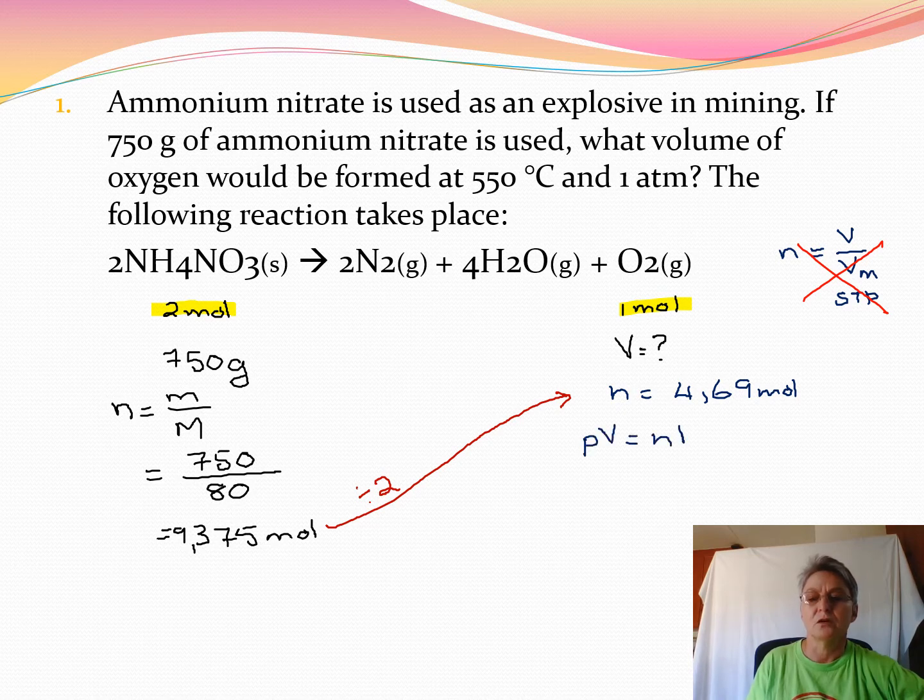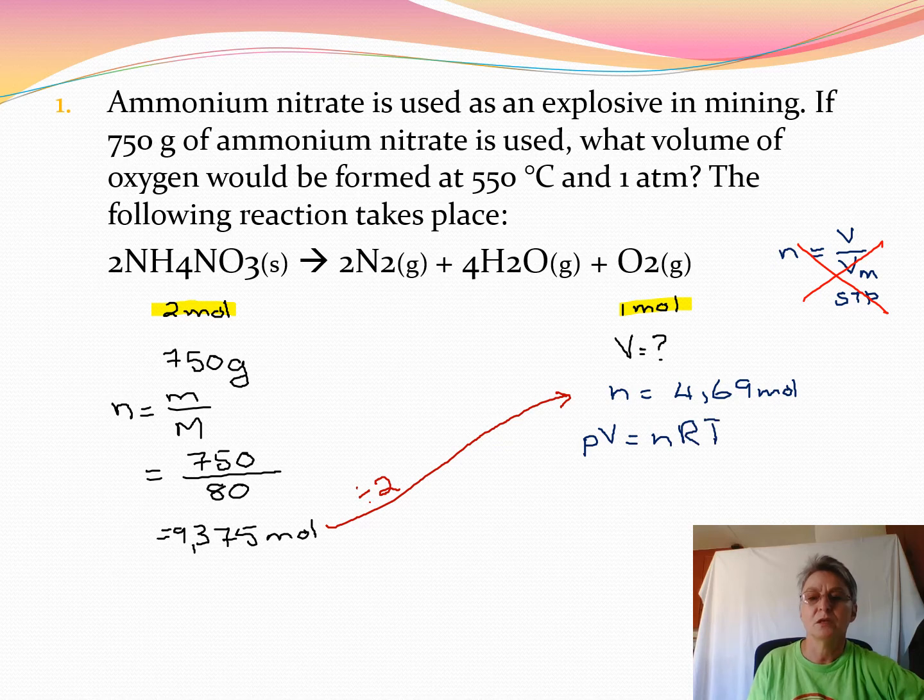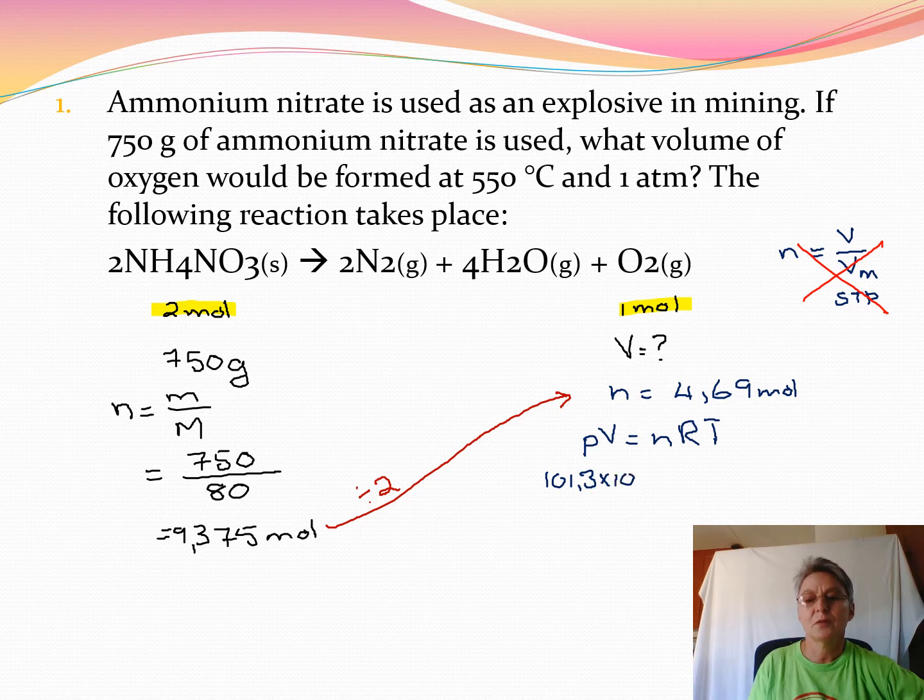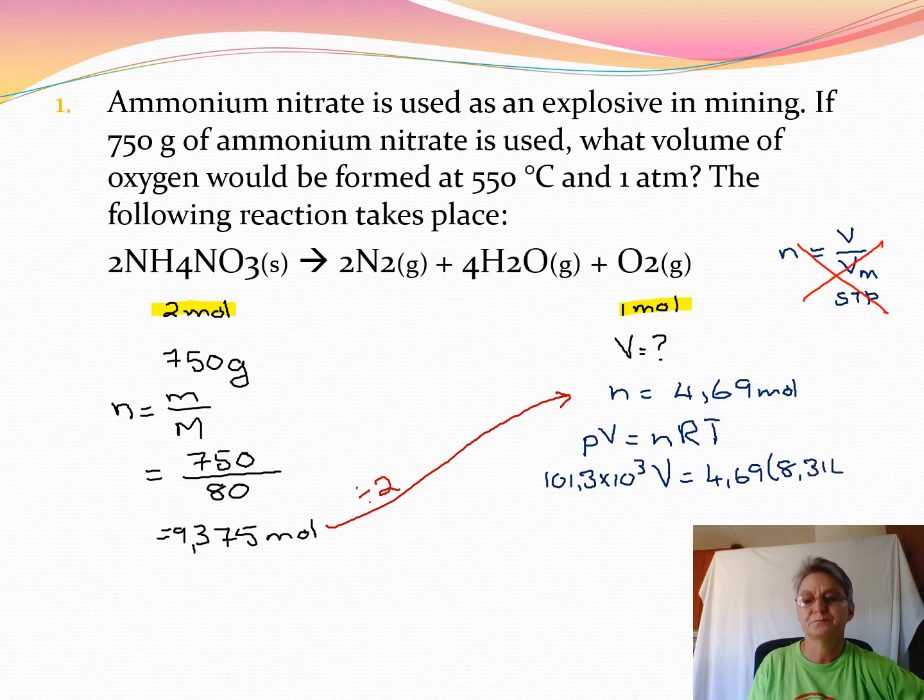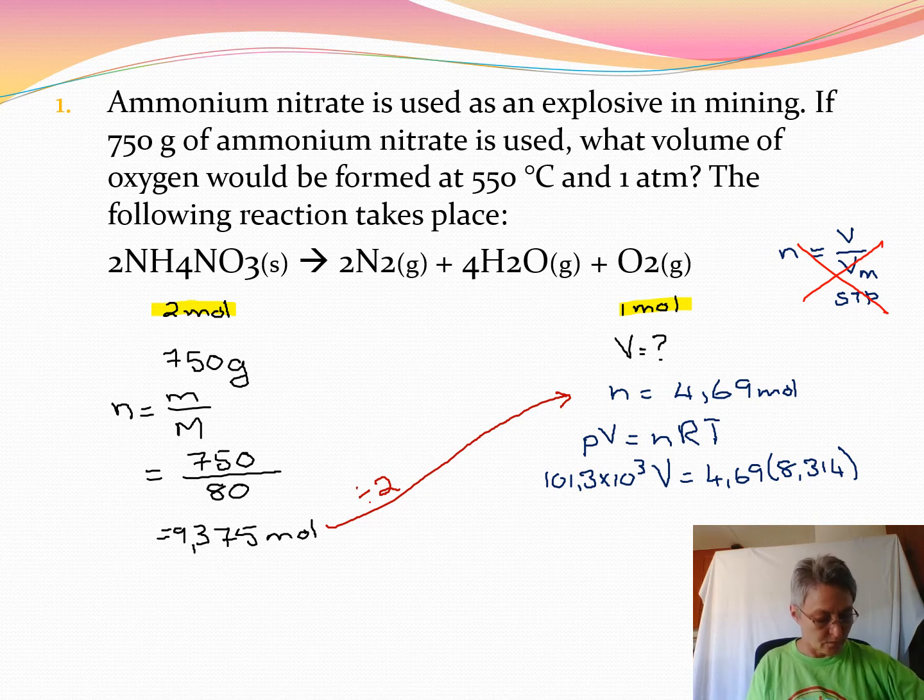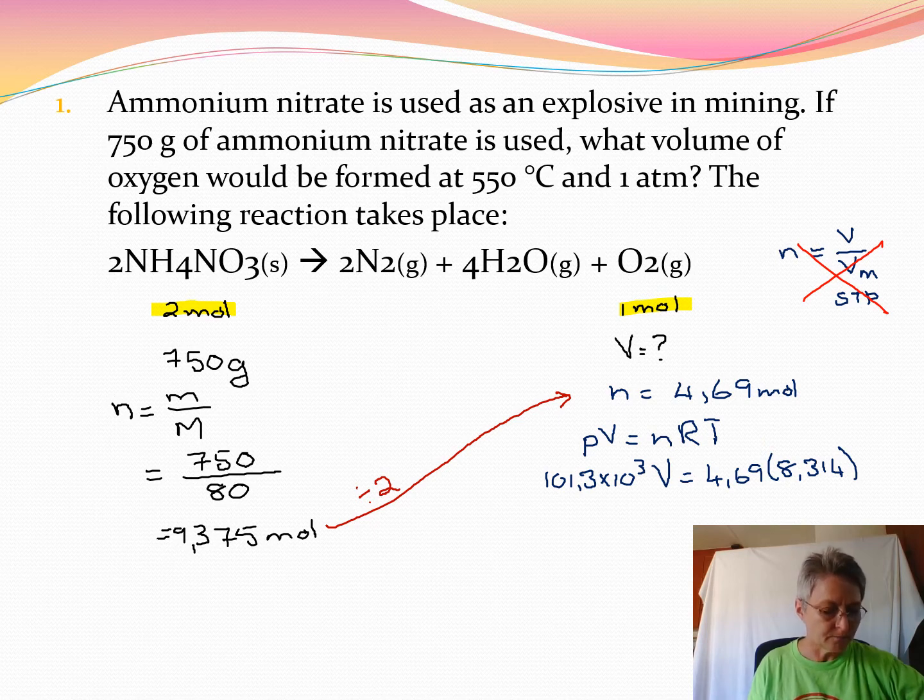PV equals nRT, where P is 1 atmosphere, which is 101.3 thousand pascals. Volume is what we need to calculate. Moles is 4.69. R is 8.314. And the temperature of 550 must be changed to Kelvin - 273 must be added to it, so it's 823 Kelvin.